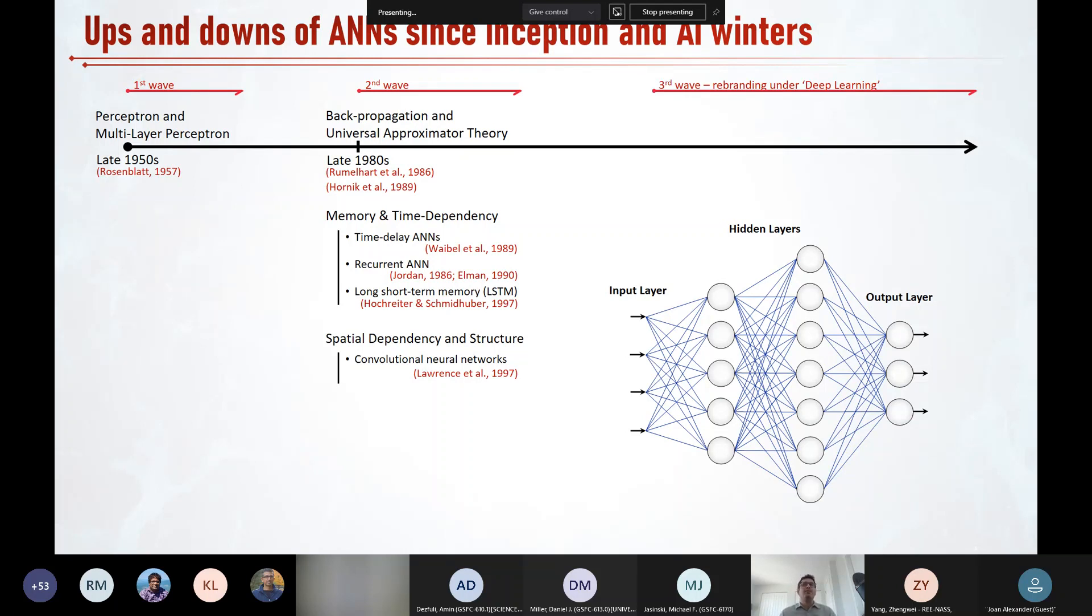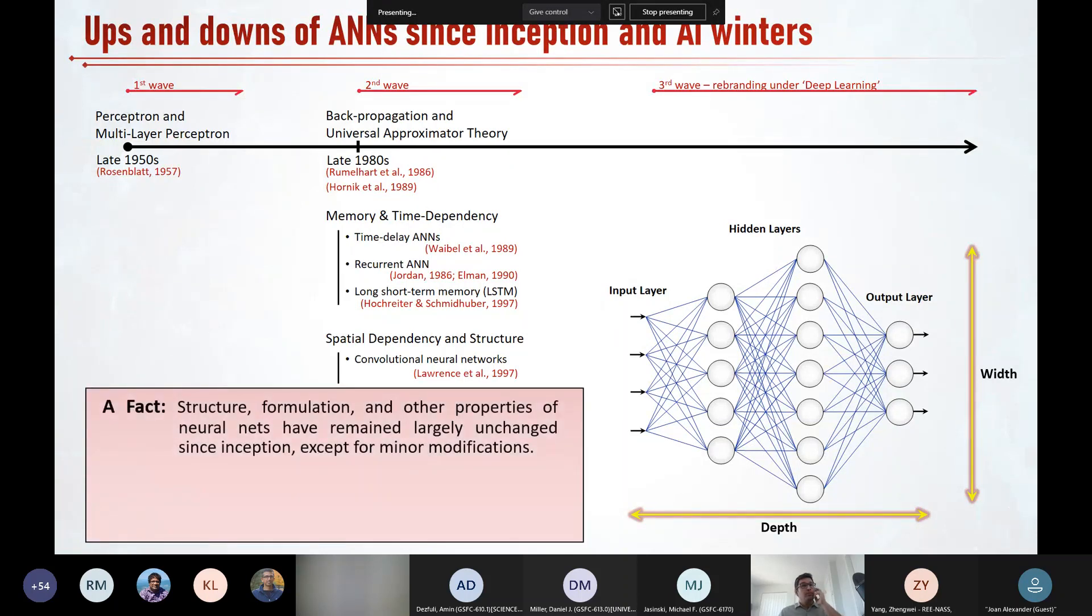Anyways, it took until early 2010s before the third wave of popularity and interest in neural networks hit, when the field was revived and renamed or rebranded as deep learning. Depth is a recently popularized term and loosely refers to the number of hidden layers in a neural network. A related term is width, which loosely refers to the number of neurons in hidden layers. Now, a deep learning model or a deep neural network typically refers to a network with two or more or many more hidden layers.